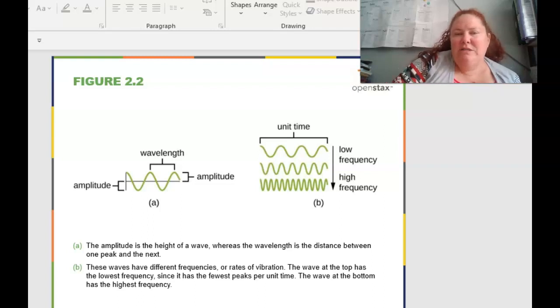Basically, how we can change the difference of these and utilize it for what we really need to see is we can change wavelengths. A couple different terms that we need to know: the amplitude is the actual height of the wave, where the wavelength itself is the distance between a peak to another peak. So amplitude is the height of the wave, where wavelength is the width from peak to peak.